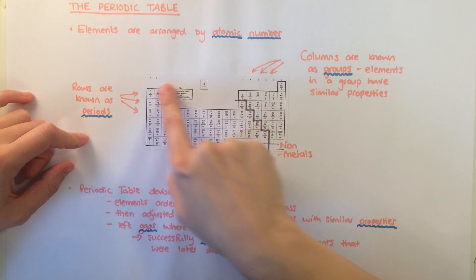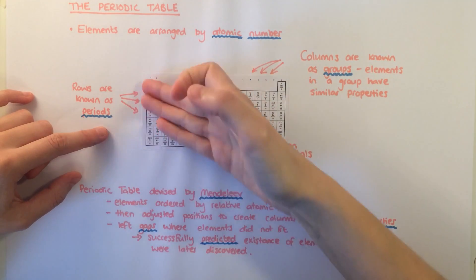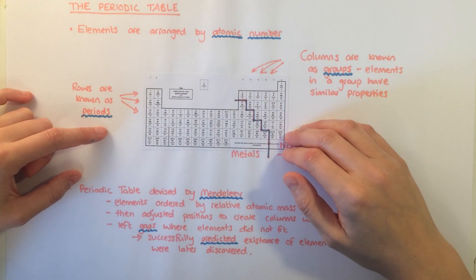These are numbered across the top: 1, 2, 3, 4, 5, 6, 7, 0. The elements in each group all have similar properties to one another.